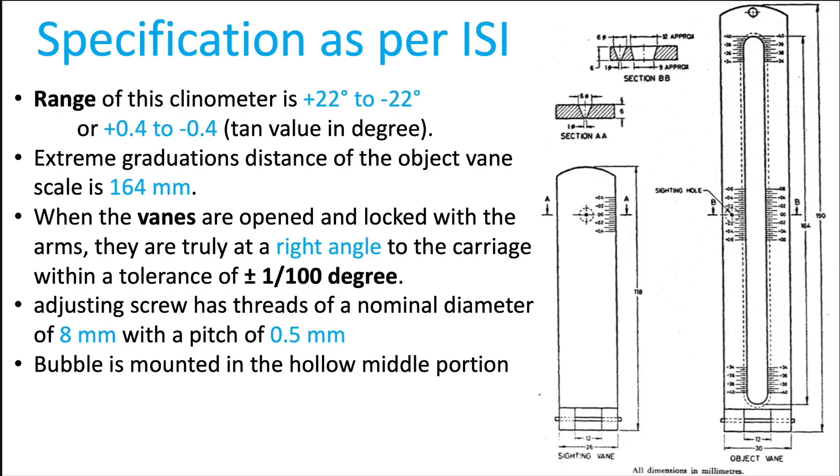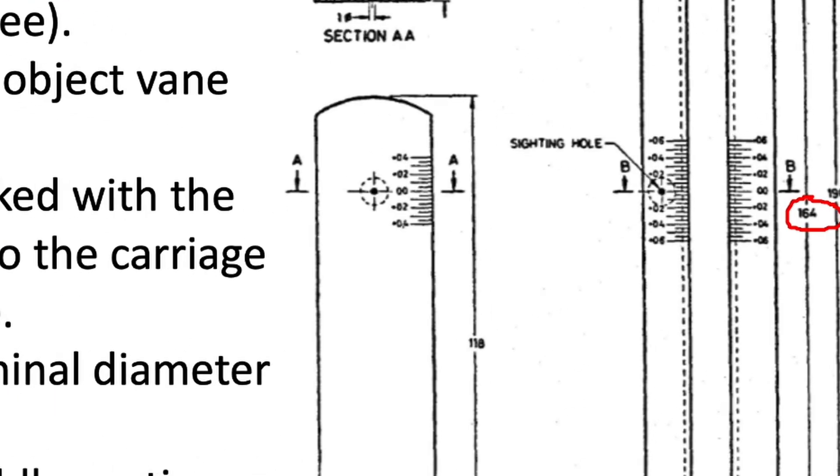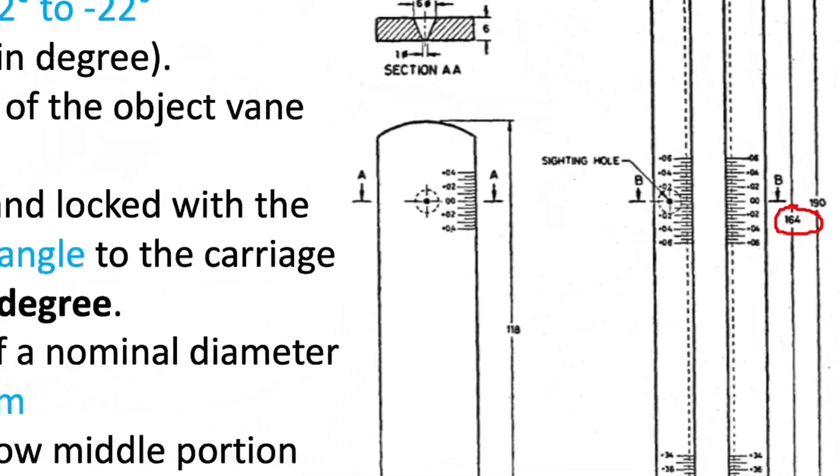The specifications of an Indian Clinometer are as per ISI. The range is ±22° ±0.4°. The extreme graduation distance on the object vane is 164 mm.